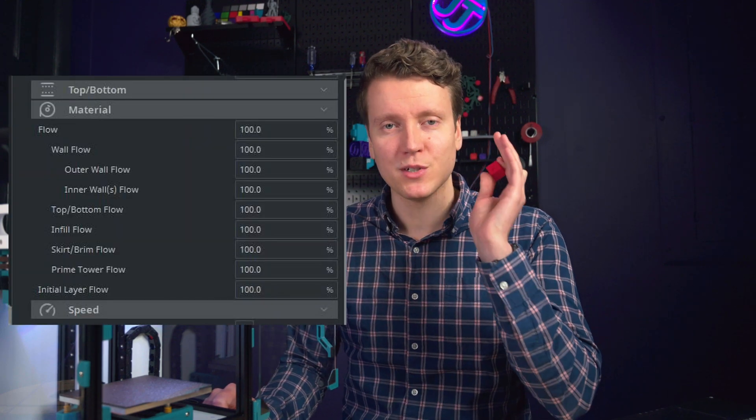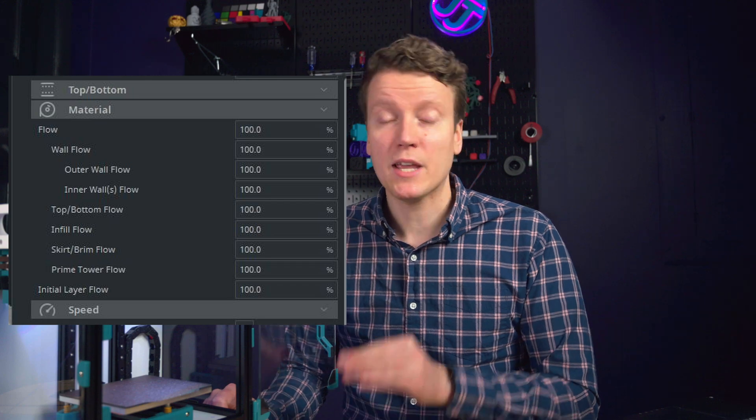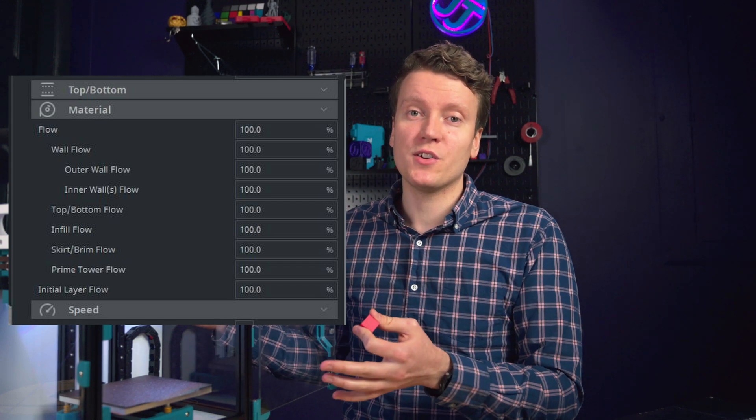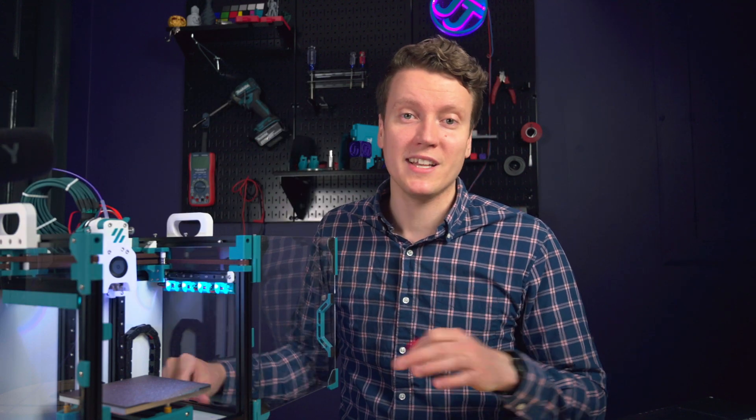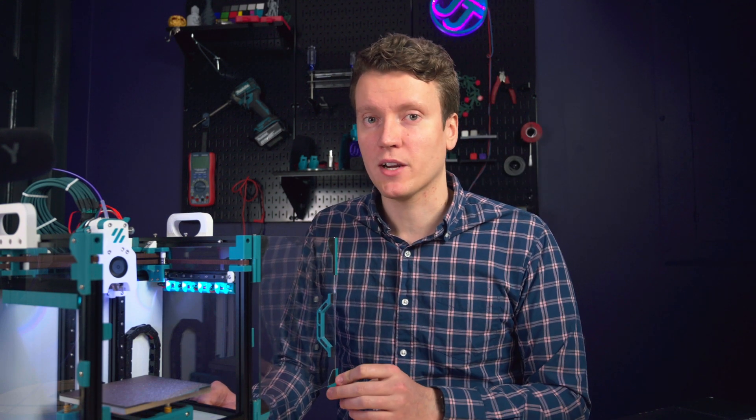And your one final tool for fixing under or over extrusions, if nothing else has worked, changing your flow rate. That's kind of your big hammer to just knock the problem out of the way. It would be better to work through all the other settings, but your flow rate just says, hey, push more filament or push less filament. And so sometimes you might need to tweak that value off of 100% if things are just not flowing correctly.